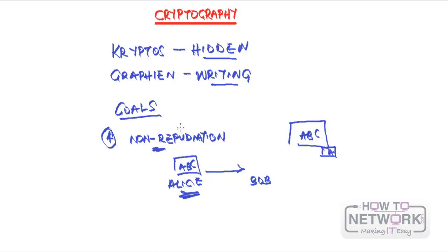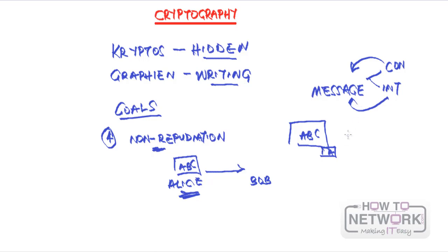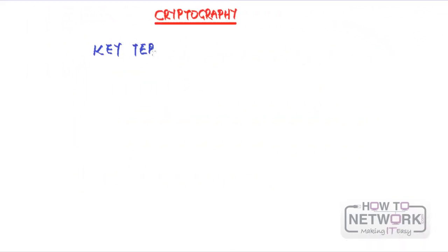So these are the four goals of cryptography. The first two — confidentiality and integrity — are characteristics of the message. While the last two — authentication and non-repudiation — are characteristics of the user. Now let's talk about some key terms that we're going to see when dealing with cryptography.